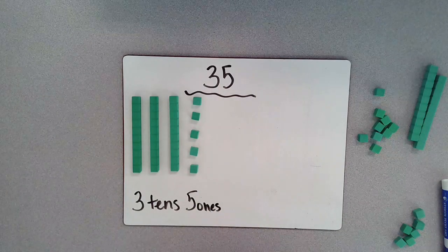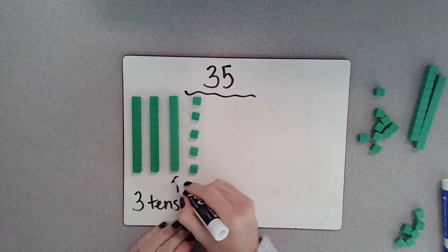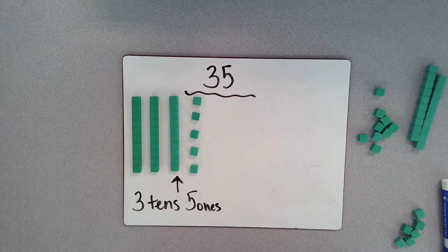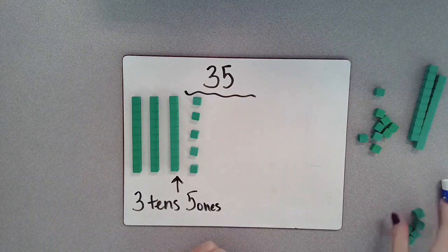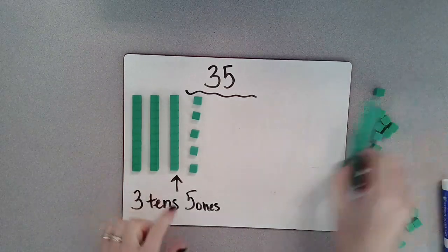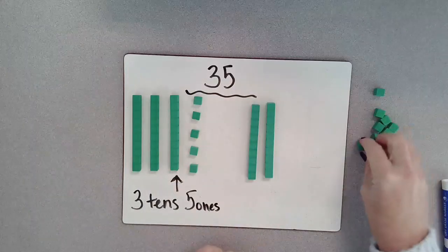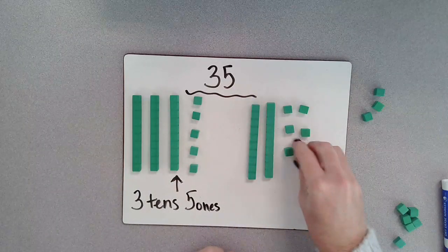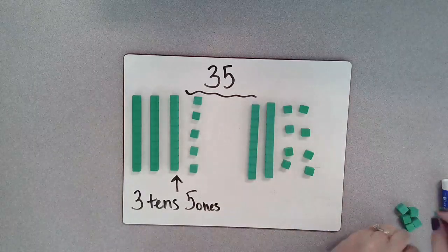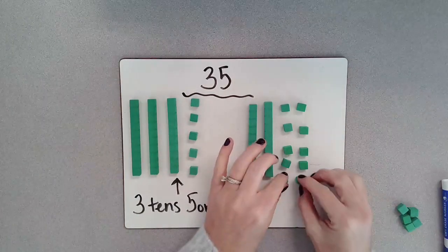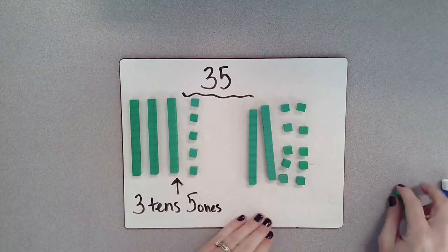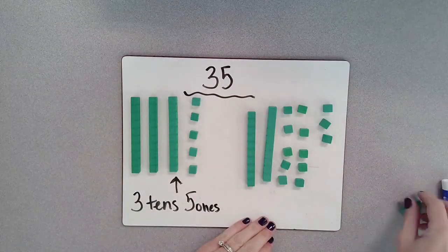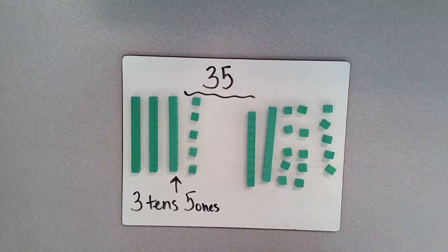Another way I can do it is I can take this 10 right here and I can break it apart into ones. So I can have my two tens. Let's say one, two, three, four, five, six, seven, eight, nine, 10. And then of course I have my five ones here: one, two, three, four, five.